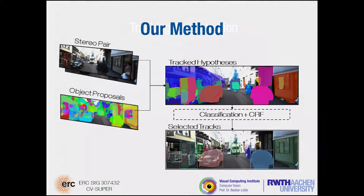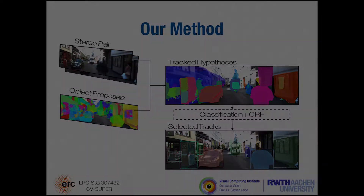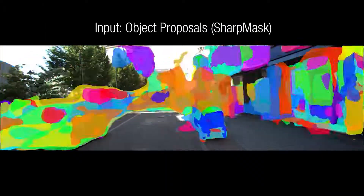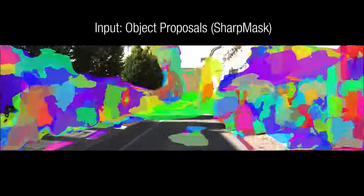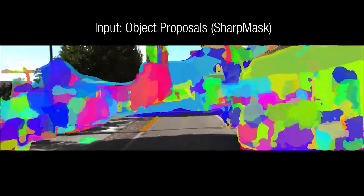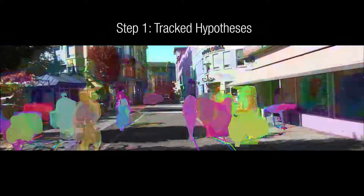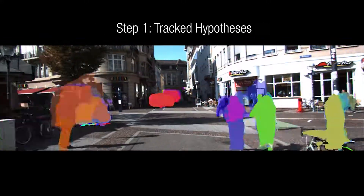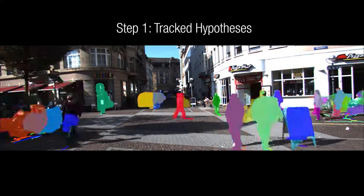We present a method to track objects in a class-agnostic way. The inputs are pixel masks generated by SharpMask, which provides a precise outline of the potential objects. We track the most promising masks to generate a set of proposal tracks.